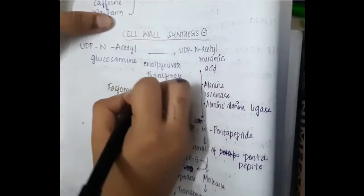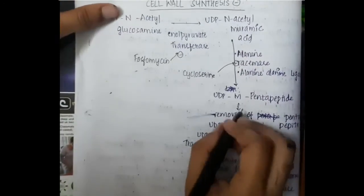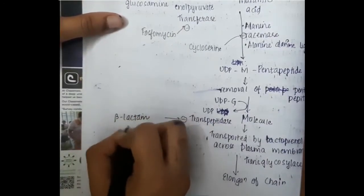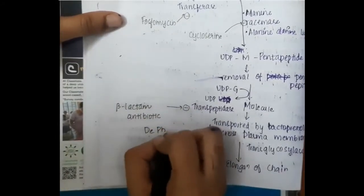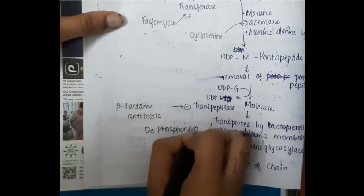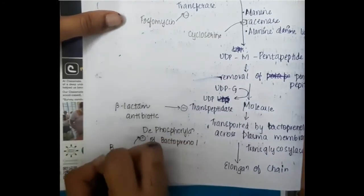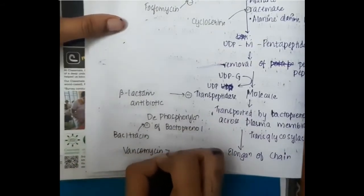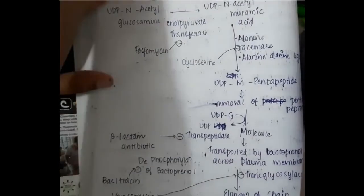The drug phosphomycin will inhibit the enolpyruvate transferase. Cycloserine will inhibit alanine racemase. Transpeptidase is inhibited by beta-lactam antibiotics. There is dephosphorylation of bactoprenol, which is inhibited by bacitracin, whereas vancomycin will inhibit transglycolase.